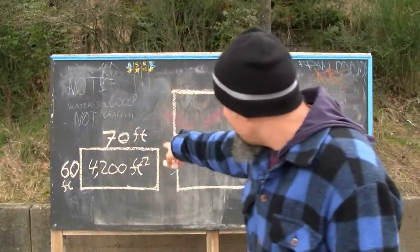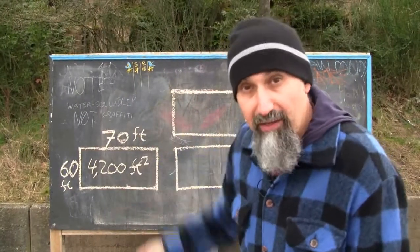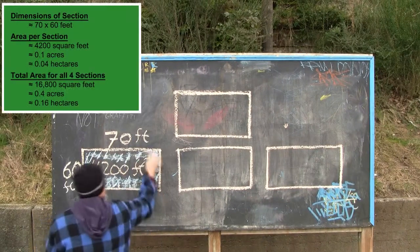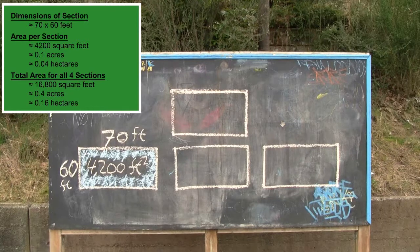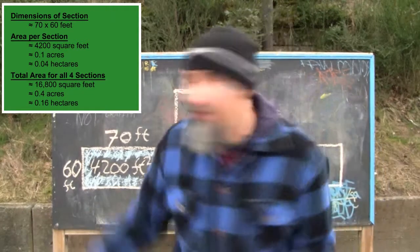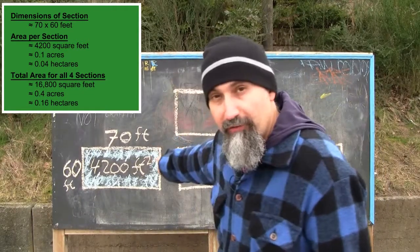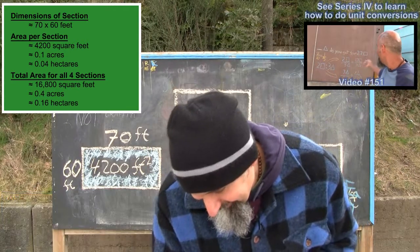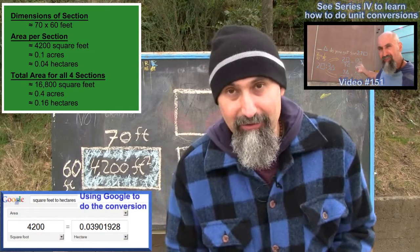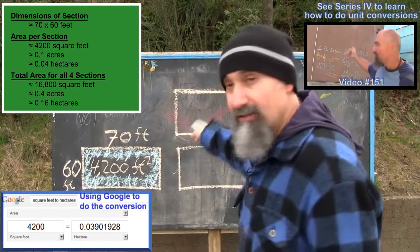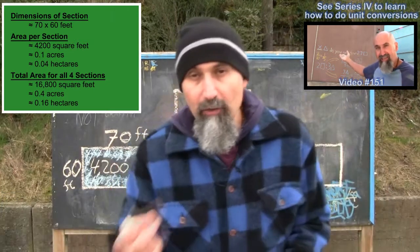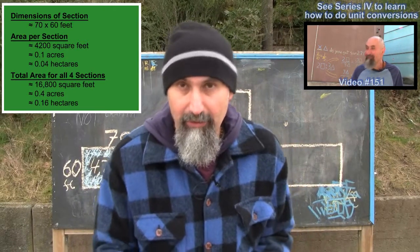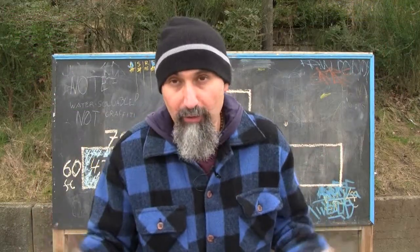The area they have to work with per section is 4,200 square feet, which comes out to about 0.1 acres or 0.04 hectares. They have four of these sections, so basically they're working with 0.4 acres or 0.16 hectares total — that's how much farmland they have to work with.